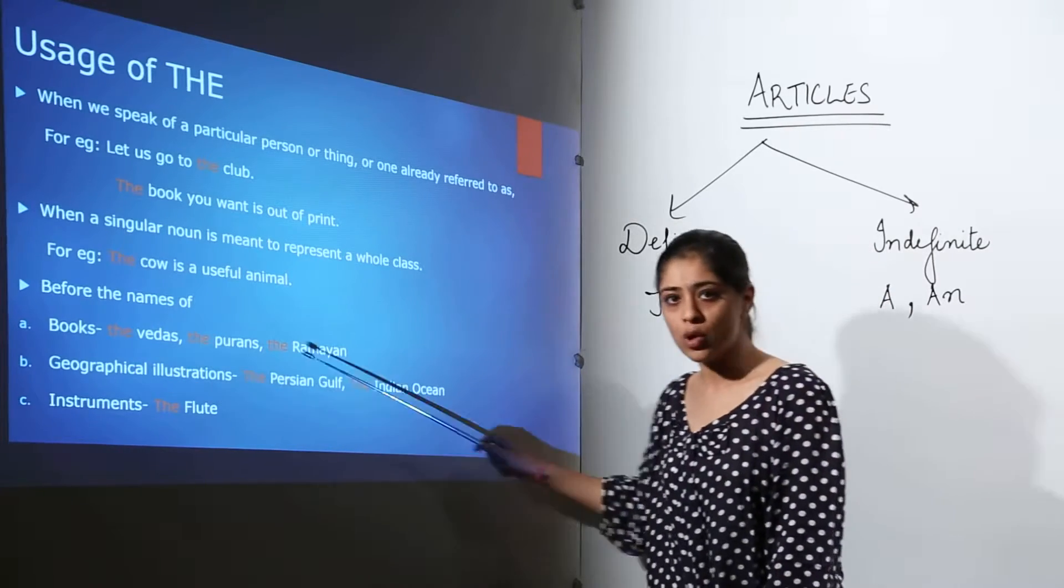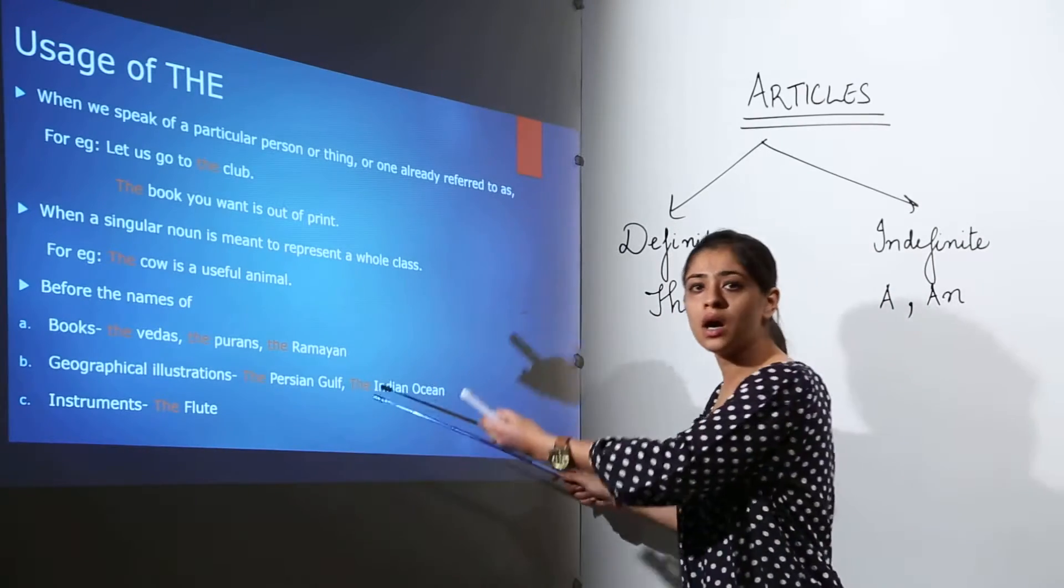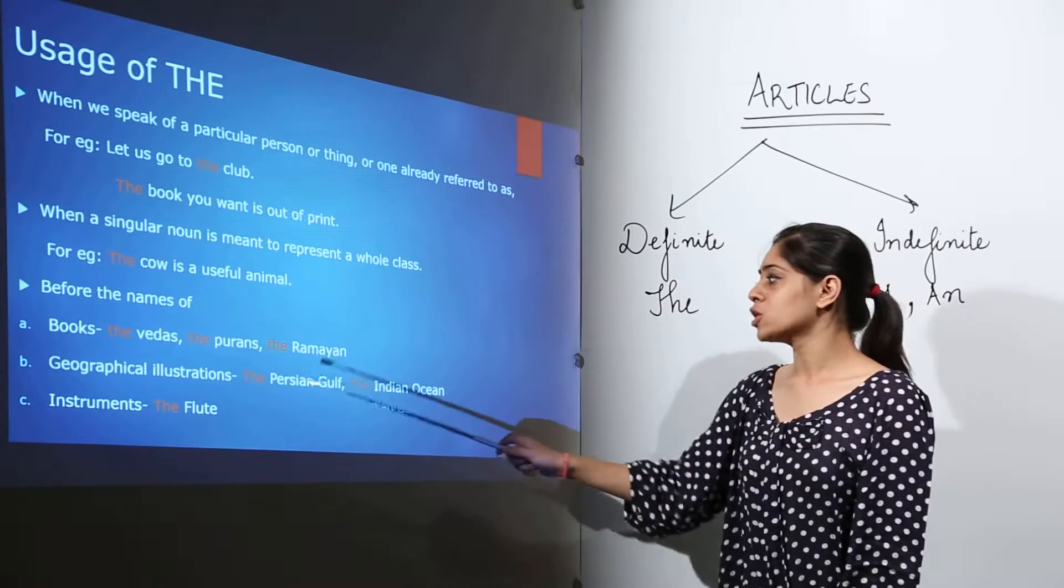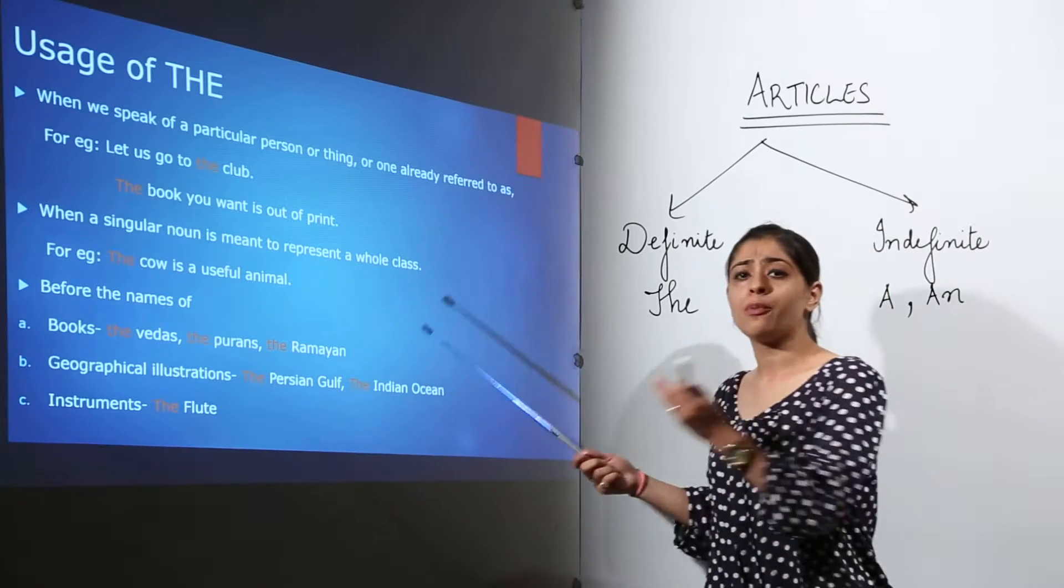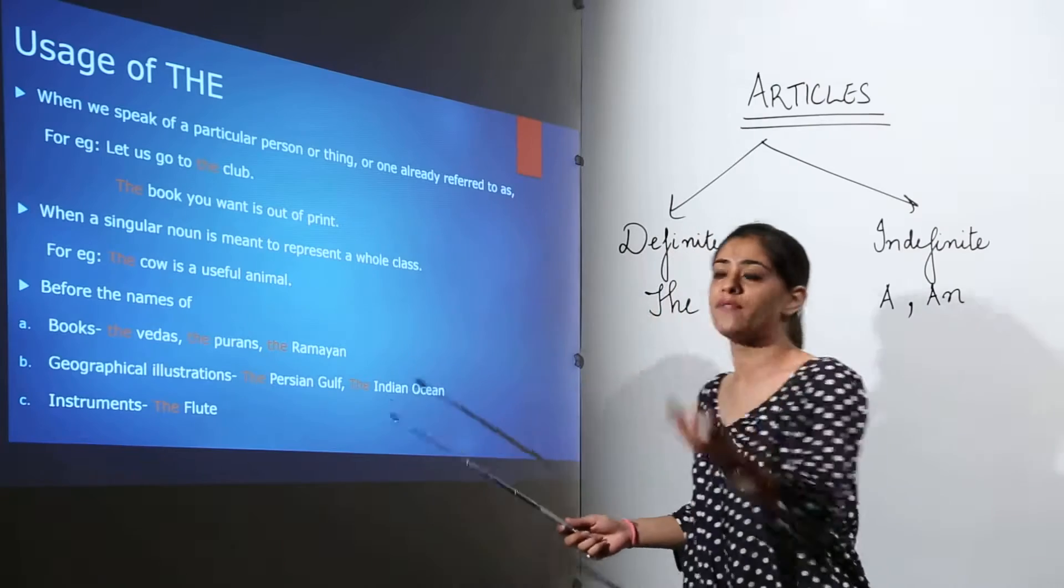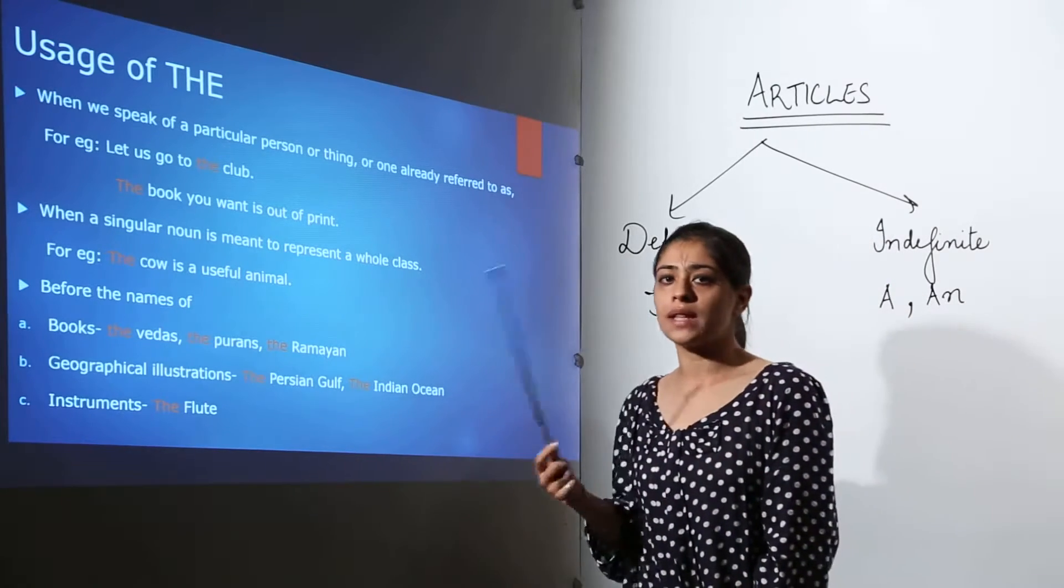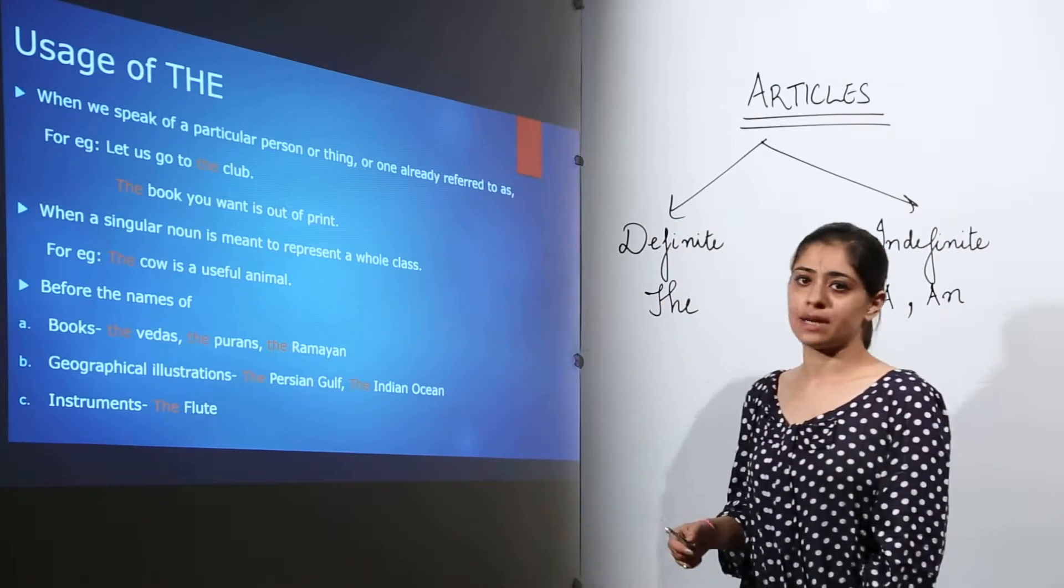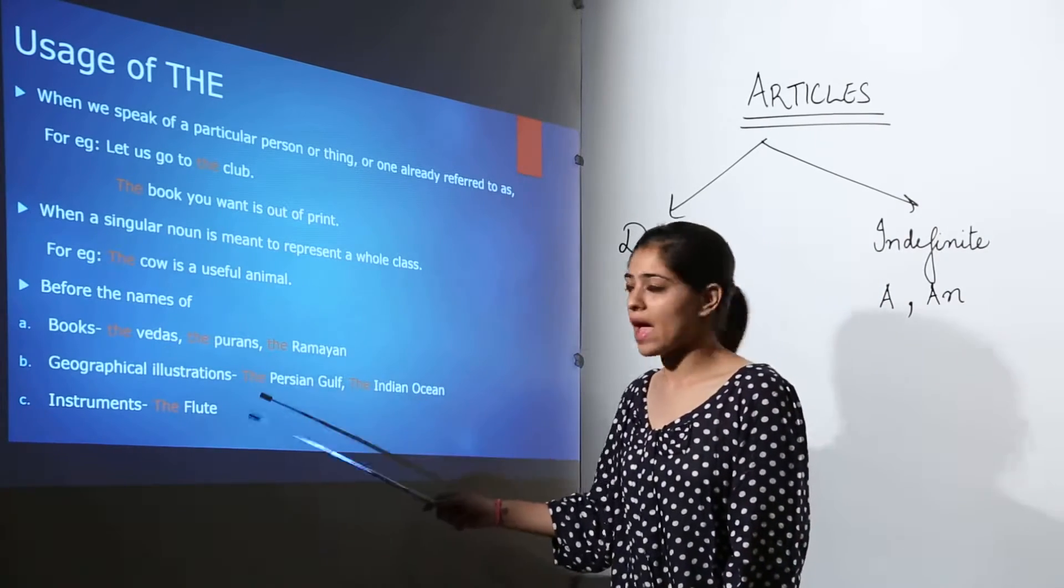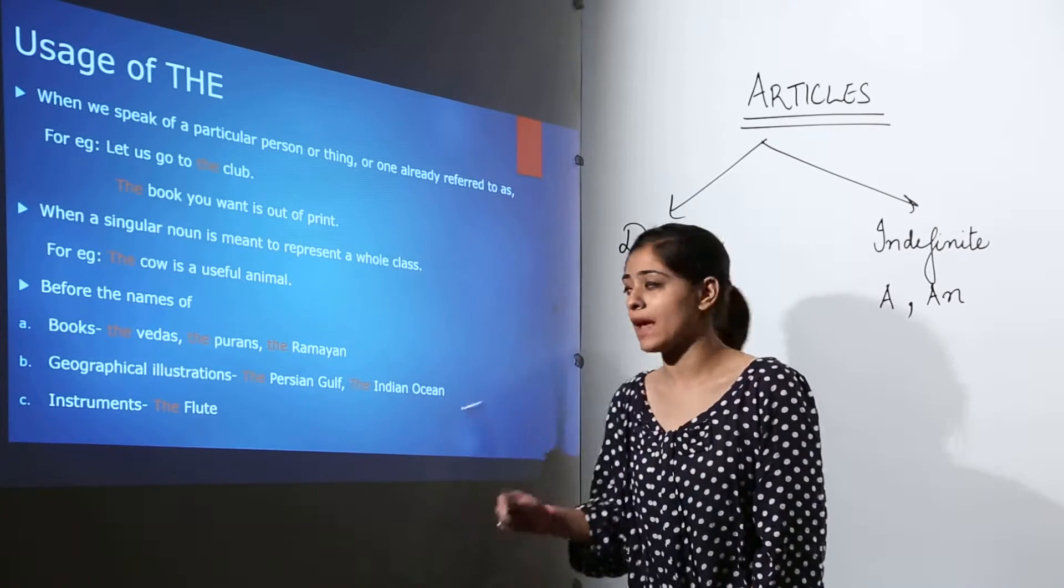Geographical illustrations: the Persian Gulf, the Indian Ocean. Now the Persian Gulf is a definite thing and it will remain that way for everybody. So it is altogether a universal factual description. So we do use the in front of geographical illustrations and factual descriptions as well.